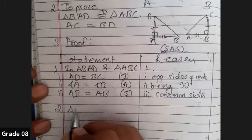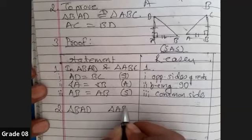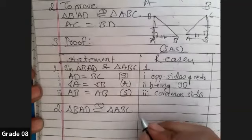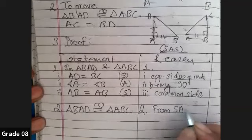After that, we get the permission that triangle BAD, triangle ABC. Put the stamp of congruent, like this. And number two from SAS axioms.